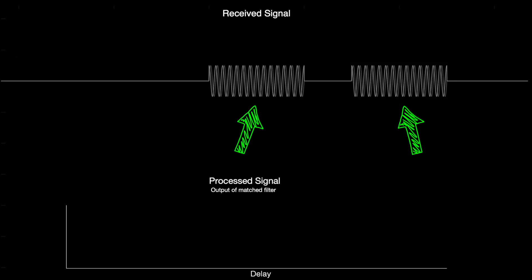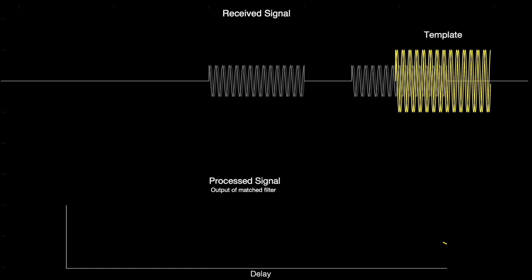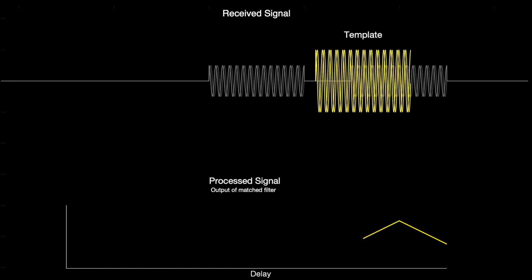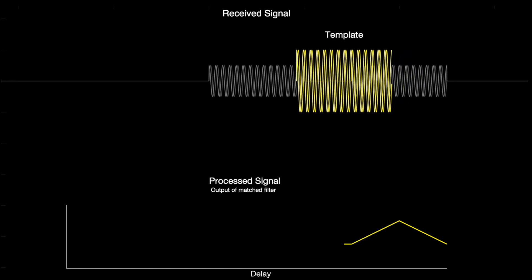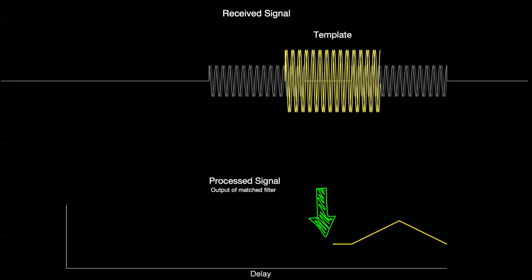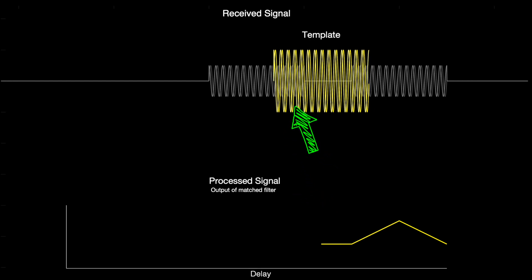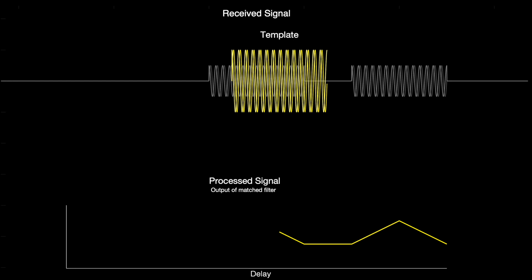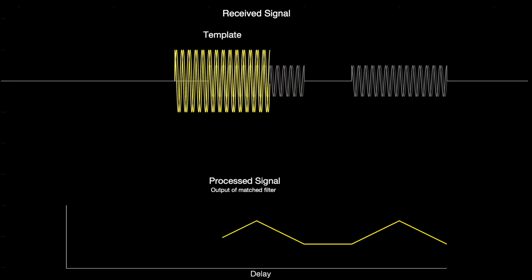And we can see this if we sweep the matched filter across the received signal with the two echo pulses. We get a peek at the first object, and then these two pulses are close enough that the template can span both of them, which produces this flat correlation line as the signal coming in from one end is exactly replacing the signal that is leaving the other. And then we get a peak for the second pulse.